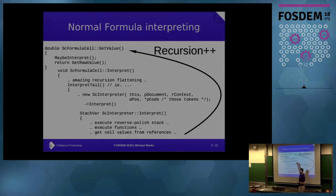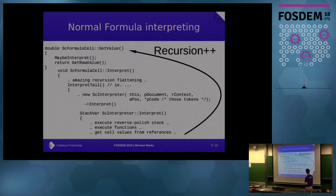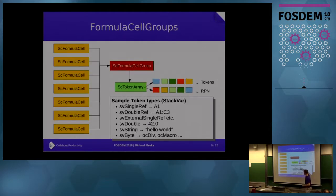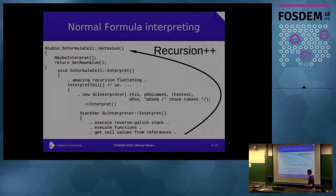There's an amazing recursion-flattening thing which I'll talk about later. Eventually execution ends up in a thing called interpret_tail, which creates an interpreter object on the heap, passes the token array, where it is in the document, and all that good stuff, then calls interpret. Interpret then starts building a stack, executes the reverse Polish tokens one by one, and as part of that process some tokens go to fetch data from elsewhere in the sheets.